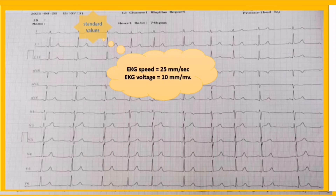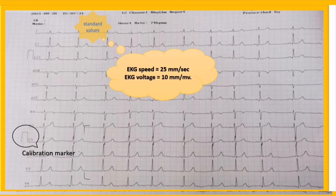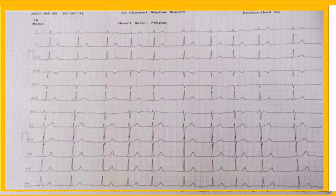Using the calibration marker is a better and faster way to check standard values. We expect the calibration marker to be two large boxes tall and one large box wide. As you see, the calibration marker here is standard, so this is a standard and acceptable strip.